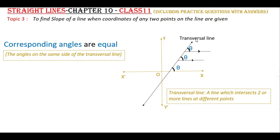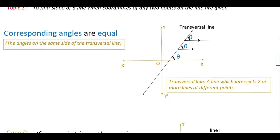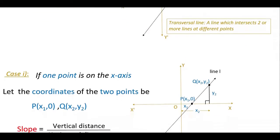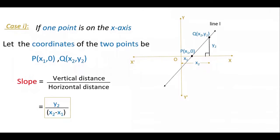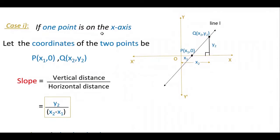Here if you see there are some lines and this line is intersecting these lines at different points. So this line is called transversal line and we have already learned in our previous class. Now these angles are corresponding angles and these angles are equal. So if a transversal line intersects parallel lines, then the corresponding angles are equal. Just remember that the corresponding angles are equal, and in the first case if one point is on the x-axis, how to find the slope of the given line.